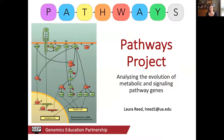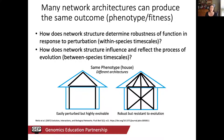We're mostly focused on the insulin signaling pathway as a starting point. Many network architectures — genetic architectures — can produce the same phenotypic outcome. The example we have here is a house: it has the same phenotype, it is a house, but the underlying architecture can be different.